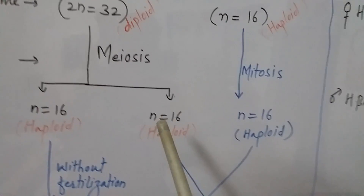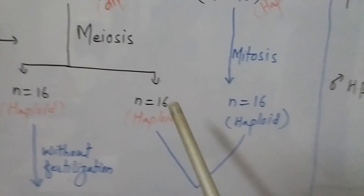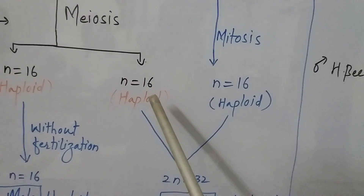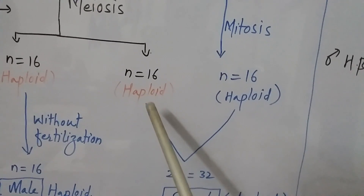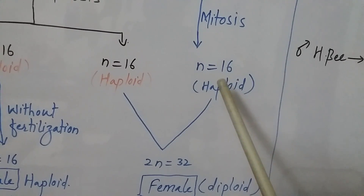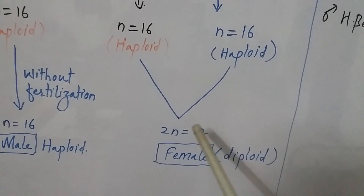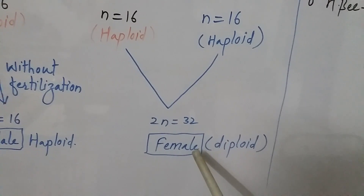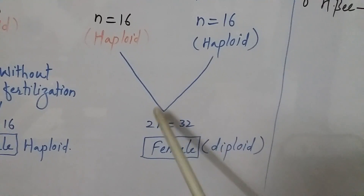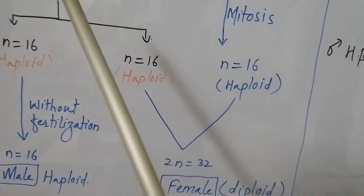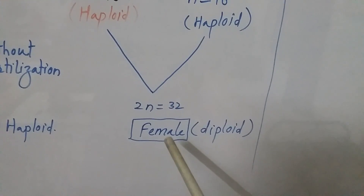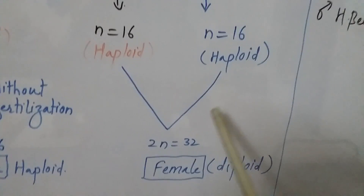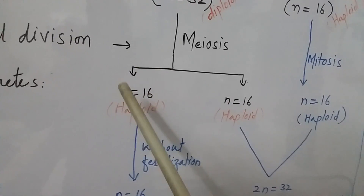The process of fertilization takes place between a female gamete with 16 chromosomes and the male gamete with 16 chromosomes. They fuse together and a diploid cell is formed — 16 from the female honeybee and 16 from the male honeybee, making 32. In this way the female honeybee, whether queen or worker, is produced.